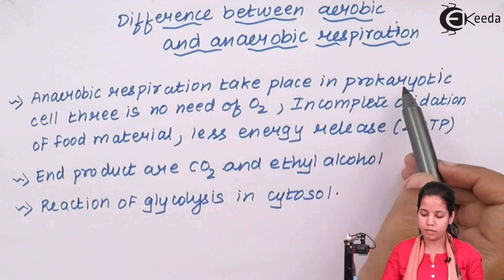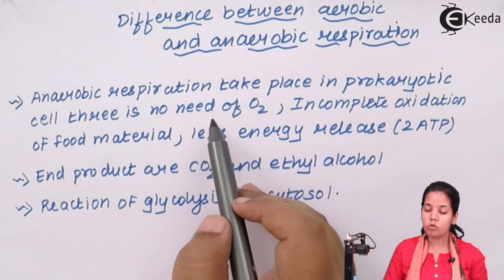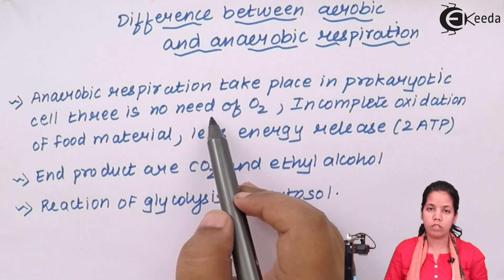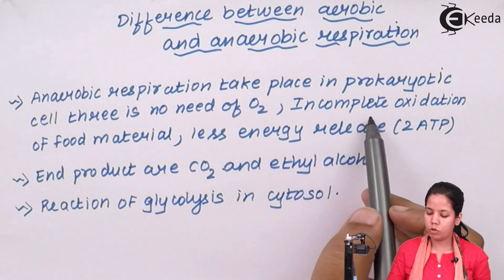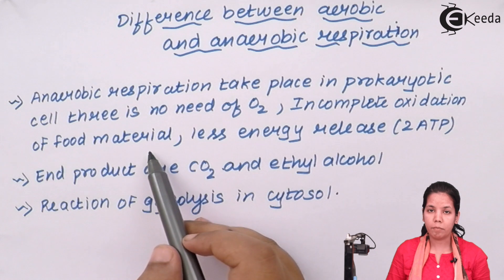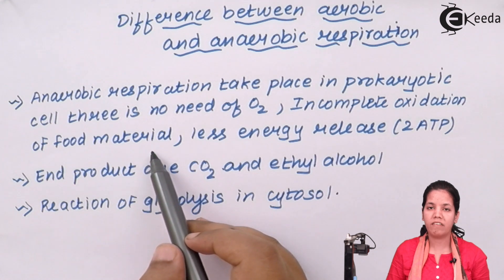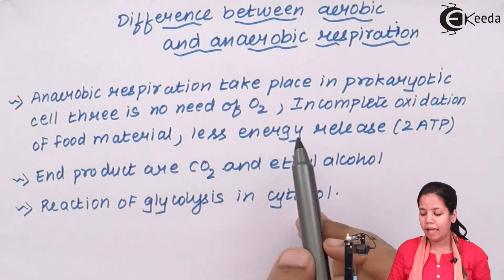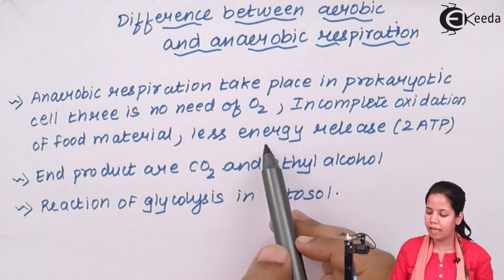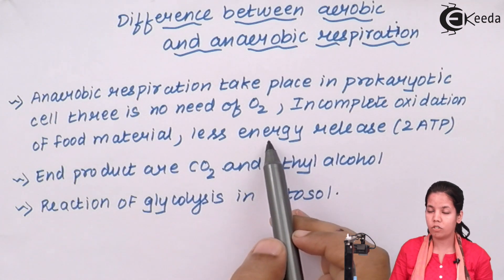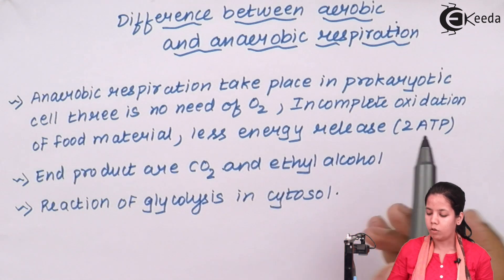Basically, in unicellular organisms, there is total no need of oxygen. It can take place in the absence of oxygen. There is incomplete oxidation of food materials — carbohydrates, proteins, and fats are broken down but in an incomplete manner. And obviously, if there is incomplete oxidation of food materials, less ATP would be synthesized, which is approximately 2 ATP.